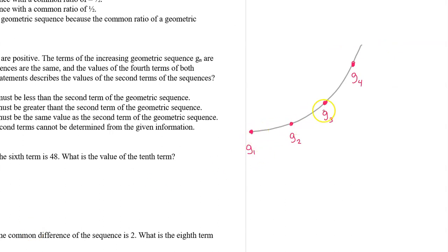If an increasing series is geometric, the values increase exponentially, like this. If an increasing sequence is arithmetic, the values increase in a linear fashion, like this.